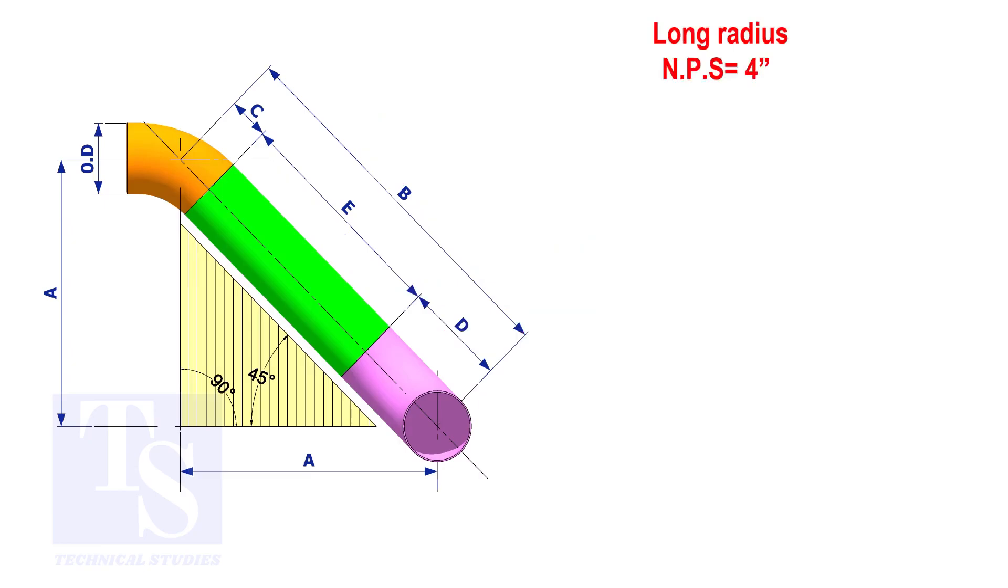Assume that the elbows are long radius. Calculate the true length of the pipe.